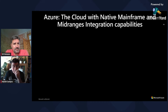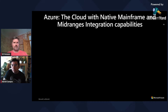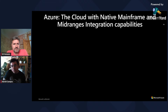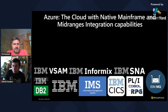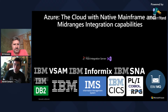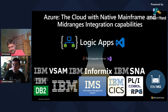Azure is the cloud with native mainframe and mid-range integration capabilities. What products run on a mainframe? No, not all of them are IBM products, but the majority are. IBM CICS, IMS, MQ, DB2, Informix, V-SUM, and SNA are all IBM brands. They have been evolving over the last 30 to 40 years, and so have we. In 1993, Microsoft released the product that provided integration with IBM host systems — yes, 30 years ago. This product evolved into Host Integration Server, which has been providing core mainframe and mid-range integration capabilities for our strategic customers. With the birth of the cloud, we have worked to incorporate the core Host Integration Server features into Azure Logic Apps.